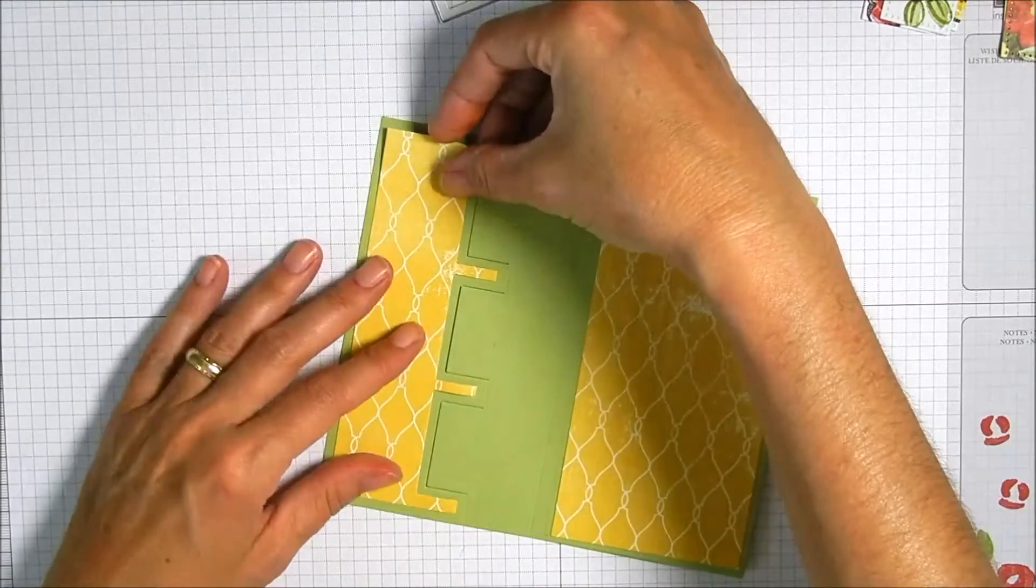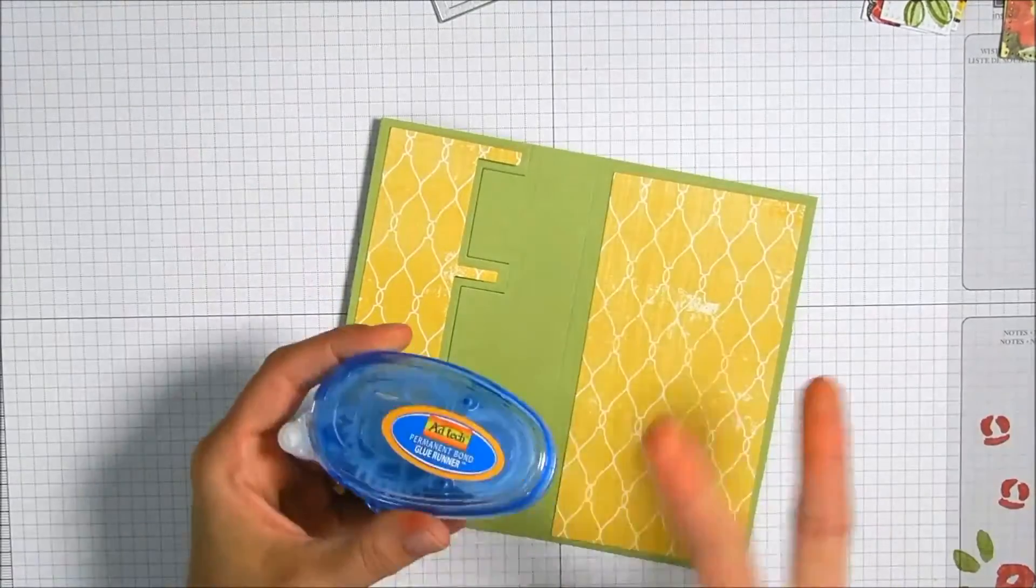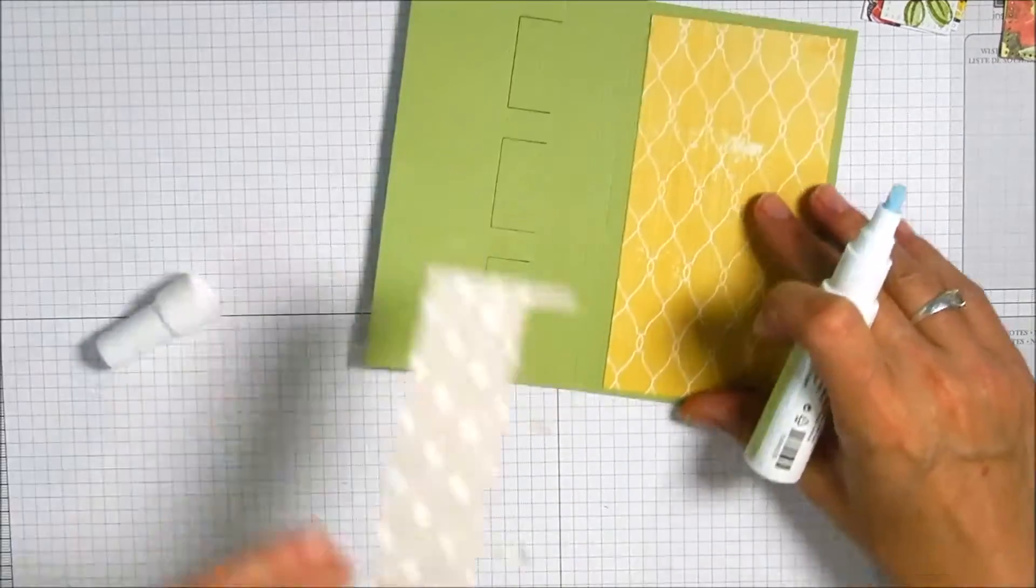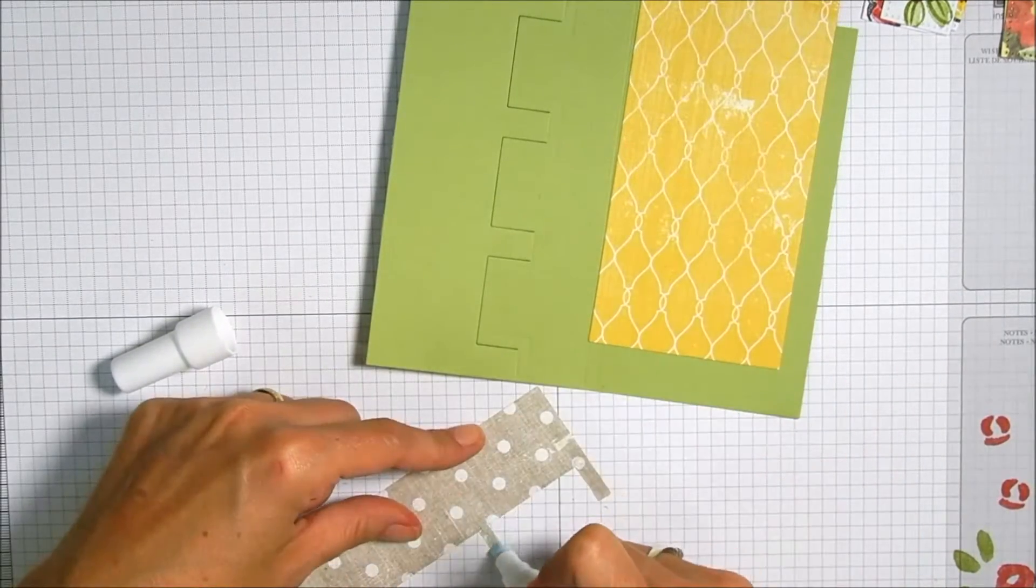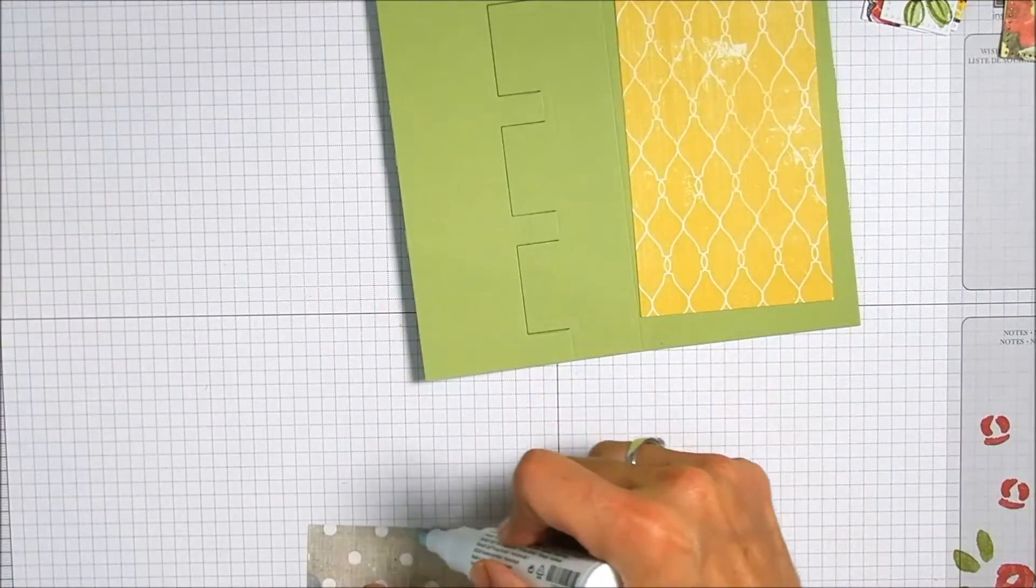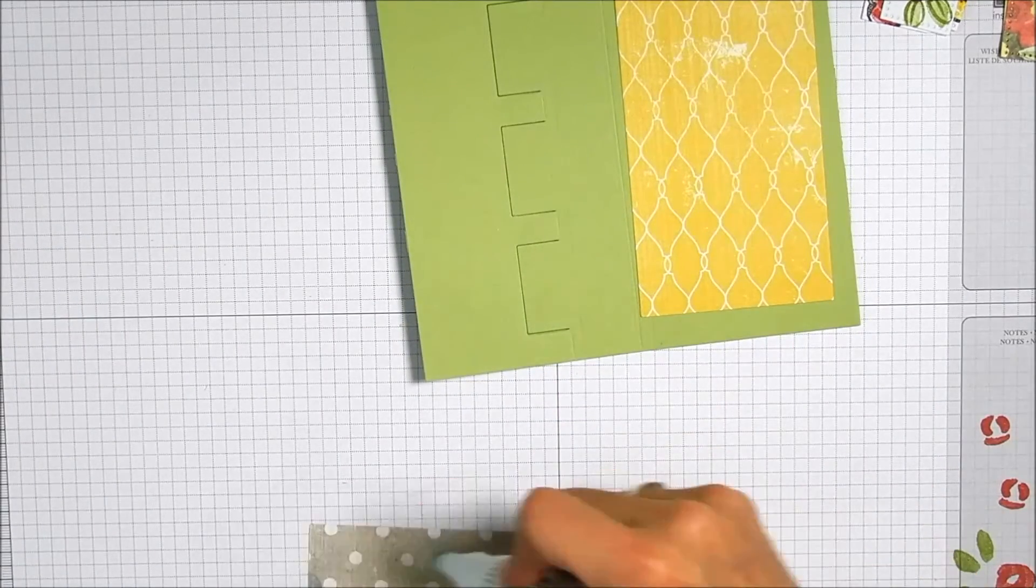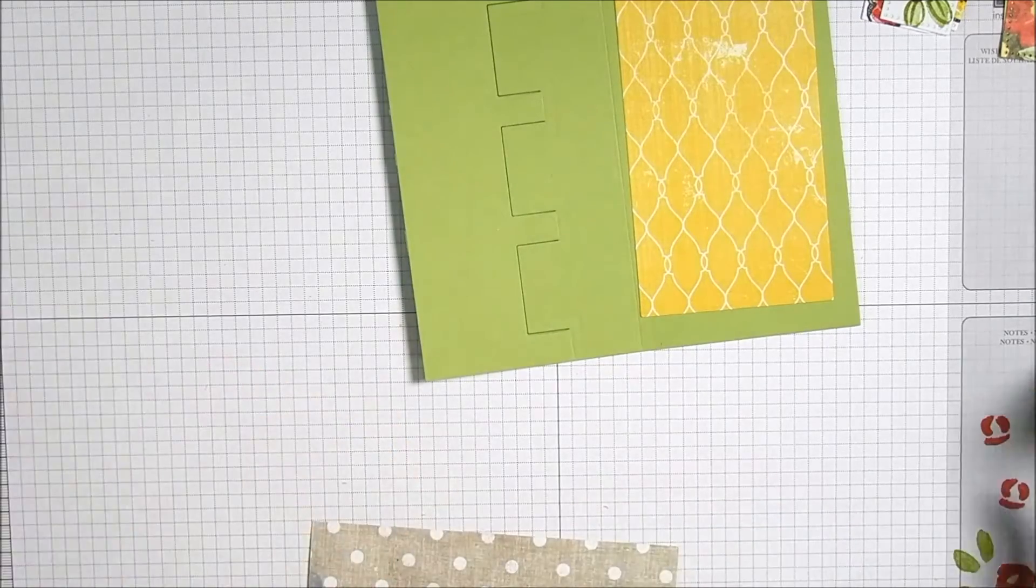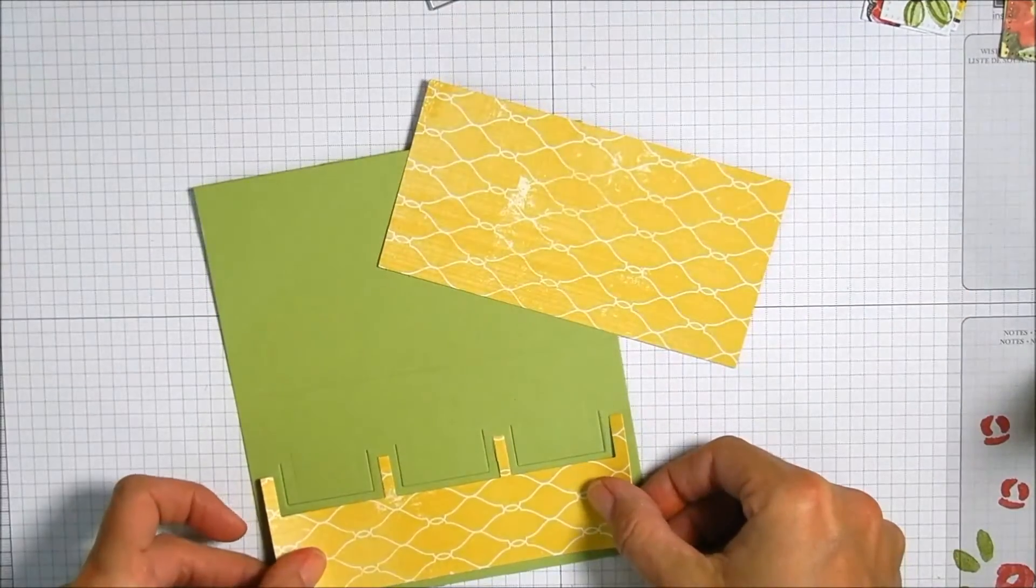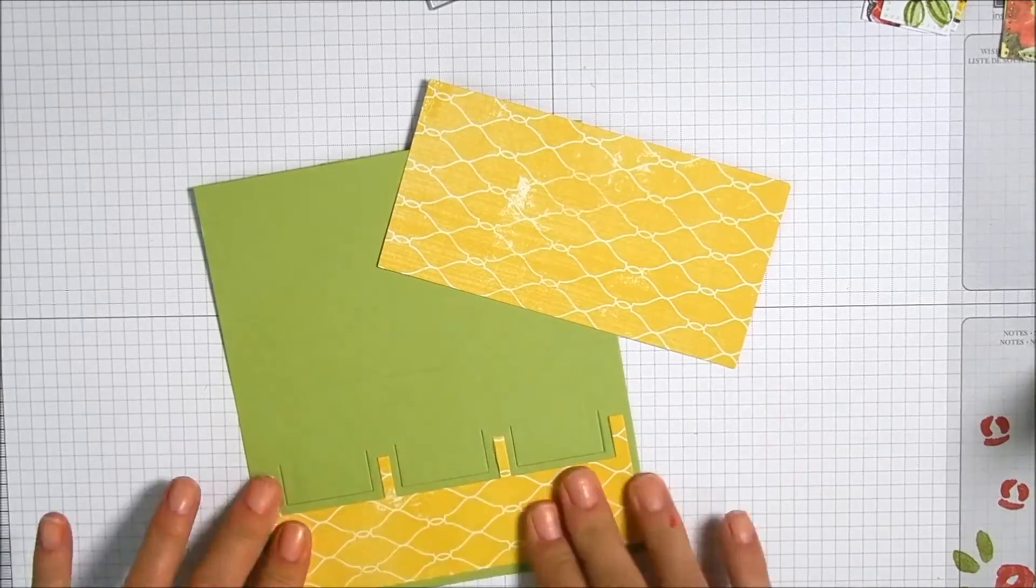You can use tape runner on these but I am going to use the two-way glue pen just because I have those narrow little strips there in between the squares and I want to make sure that those are glued down real well. I just don't want to mess with them maybe coming up and getting torn or something like that.